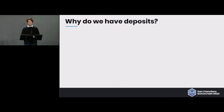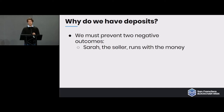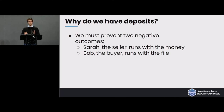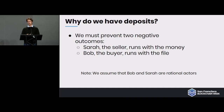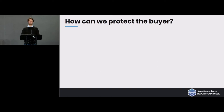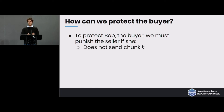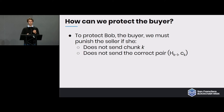Why do we need deposits? There are two negative outcomes to prevent: Sarah the seller running with the money, and Bob the buyer running with the file. We assume both Bob and Sarah are rational actors who will not willingly lose money irrationally. To protect the buyer, we must punish the seller if she does not send a chunk or does not send the correct pair — recall that pair is the intermediate hash state just before stage k and the chunk at stage k.